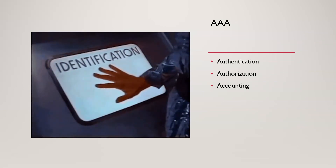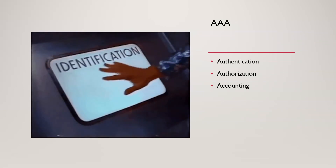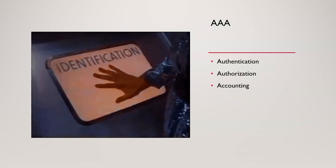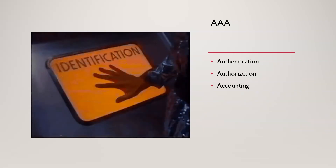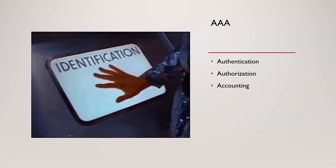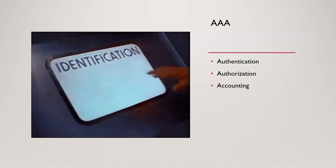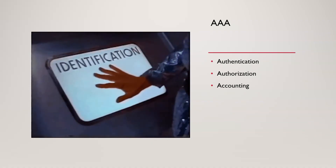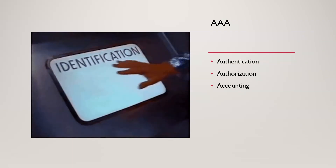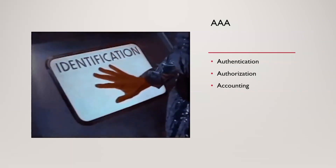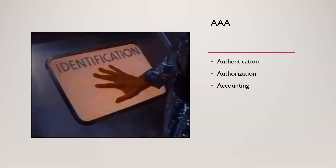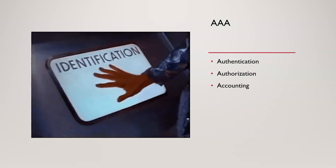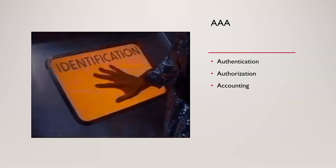With ABAC, you can add more granular access based on attributes — for example, a nurse in Texas might only be able to access patients in Texas and not patient information from Florida. There's also PBAC — policy-based access control — where you set a policy to automate giving that access. There's a lot more around access control, but those are some of the key ways to handle authorization.